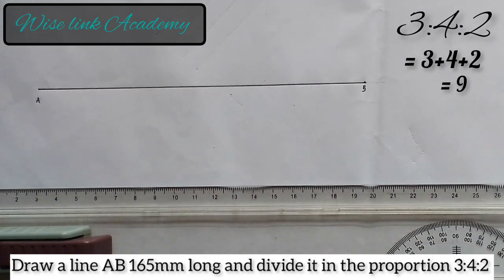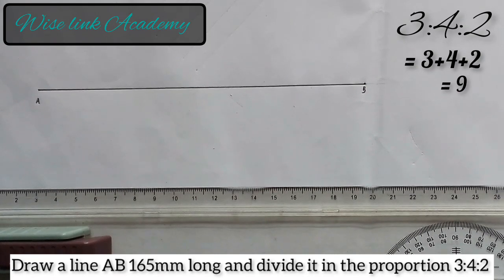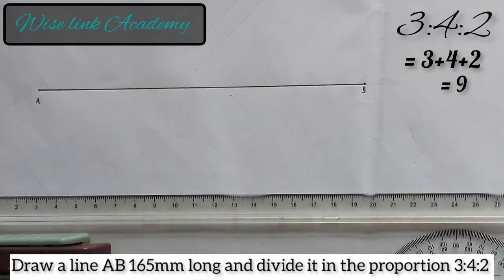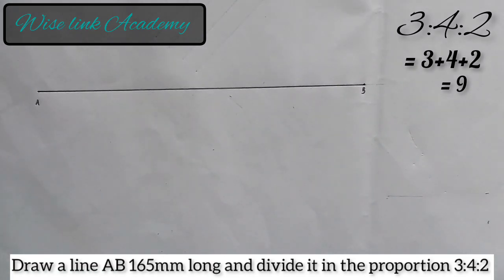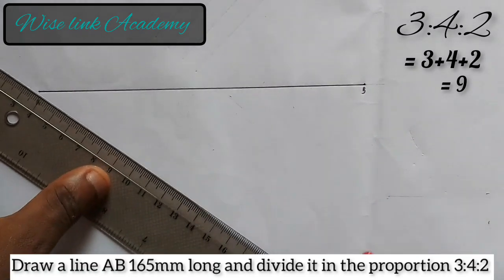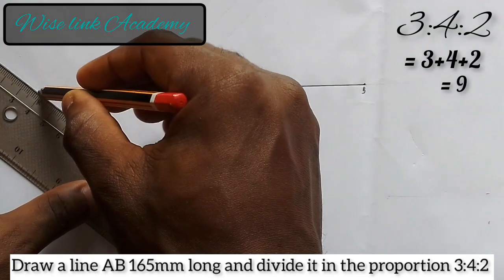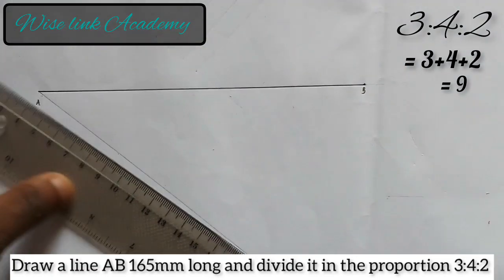Now, what's next task? And divide it into portions of 3, 4, and 2. So we have already summed the numbers, which is 9. So I'm going to draw an inclined line this way with my ruler. Draw any angle of your choice.